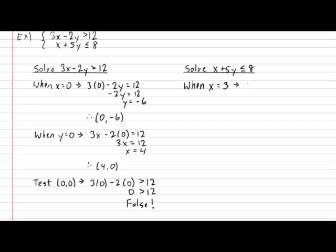We get 3 plus 5y is equal to 8. Therefore, 5y is equal to 5 and y is equal to 1. So the first point that we have available to us is located at 3 and 1. Let's get a second point. How about if I plug in y equals 0? Let's see what happens. We get x plus 5 times 0 is equal to 8. Therefore, x is equal to 8. So it gives us a second point located at 8 and 0.